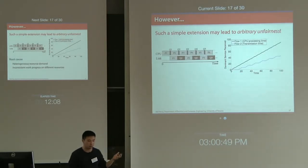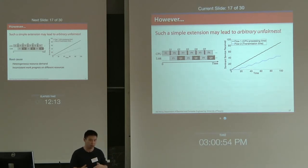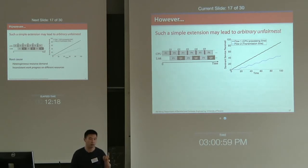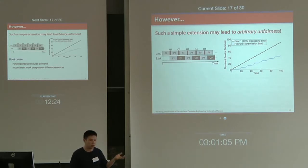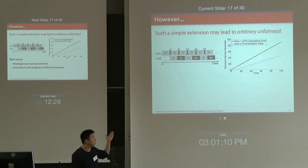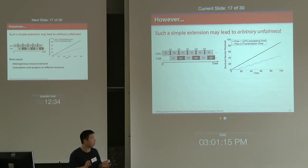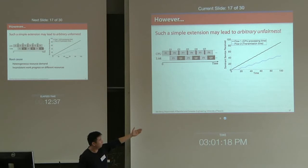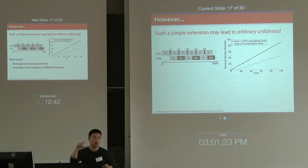Consider an example: flow one sends packets P1, P2, P3 with dominant resource CPU, while flow two sends Q1, Q2, Q3 with dominant resource link bandwidth. If you apply the simple round-robin extension, the resulting schedule looks like the left figure. Looking at the dominant processing time in the right figure, you can see that the service gap between the two flows becomes larger and larger, eventually leading to an unbounded RFB.